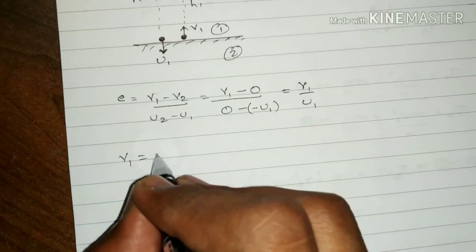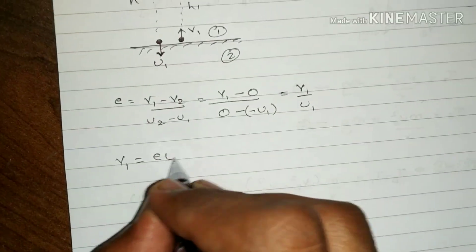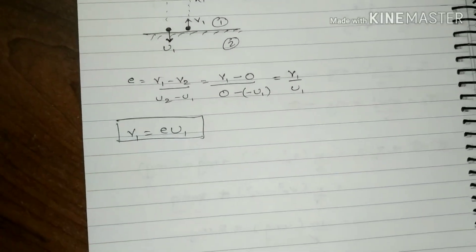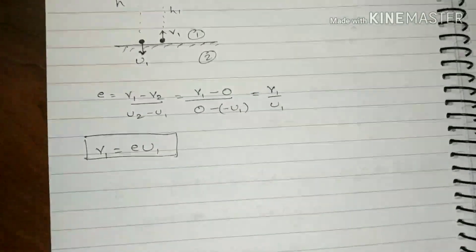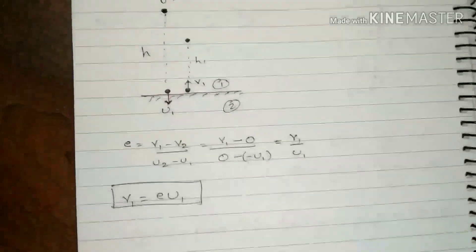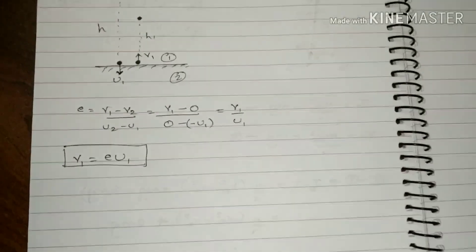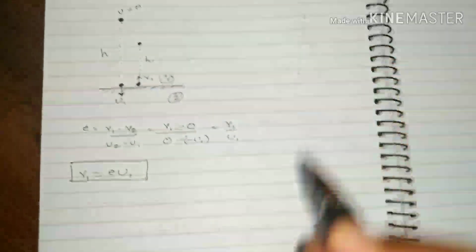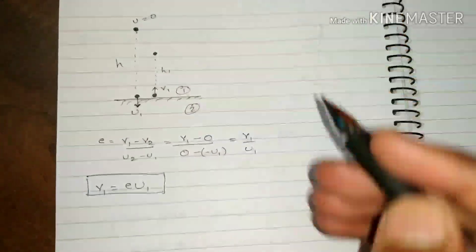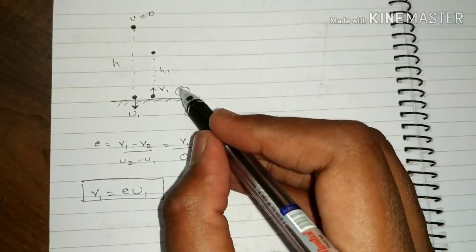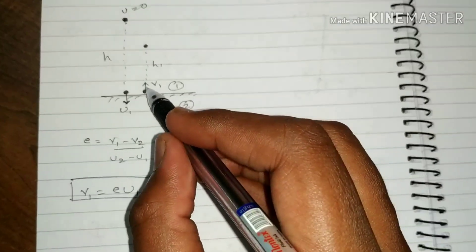Finally, v1 will be equal to e times u1. This is your velocity of the ball just after the first bounce. Now, speaking about the first bounce and thinking further — what about the bounce after that?